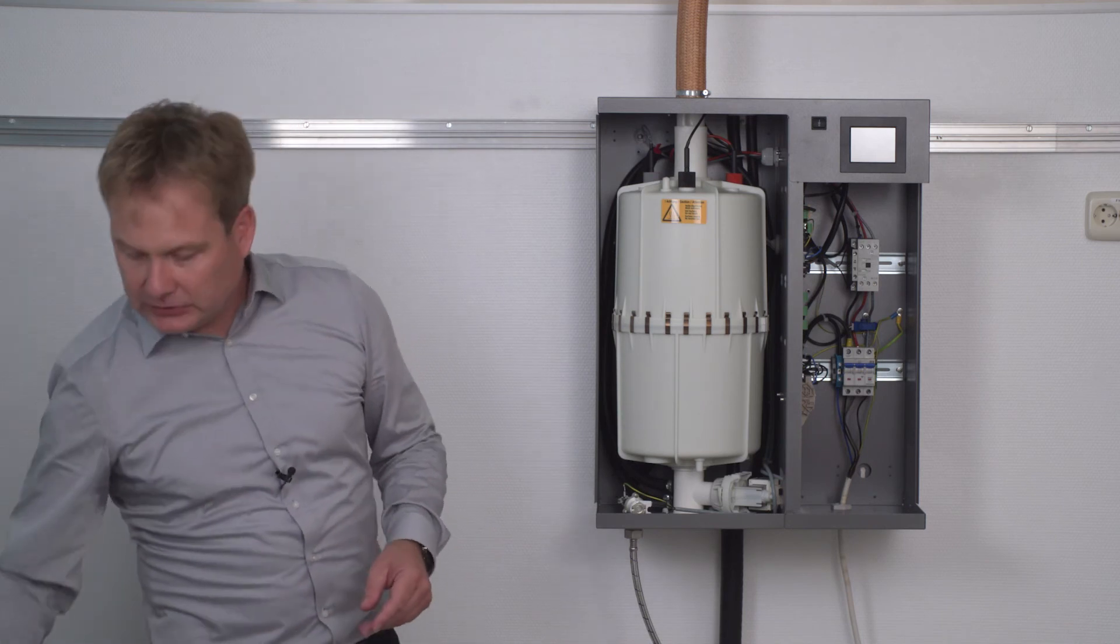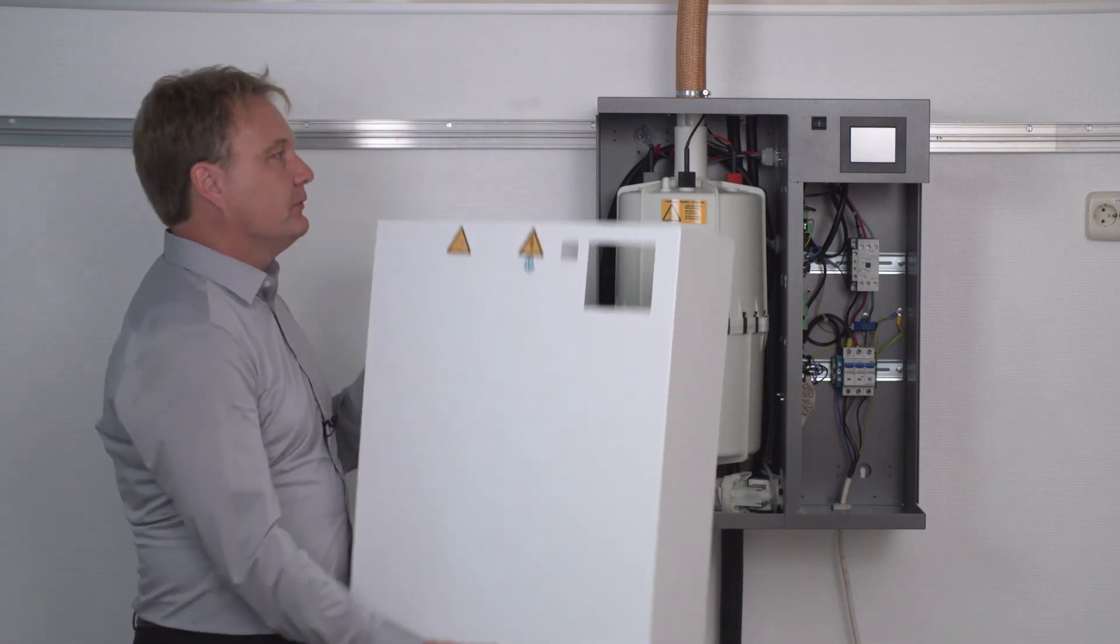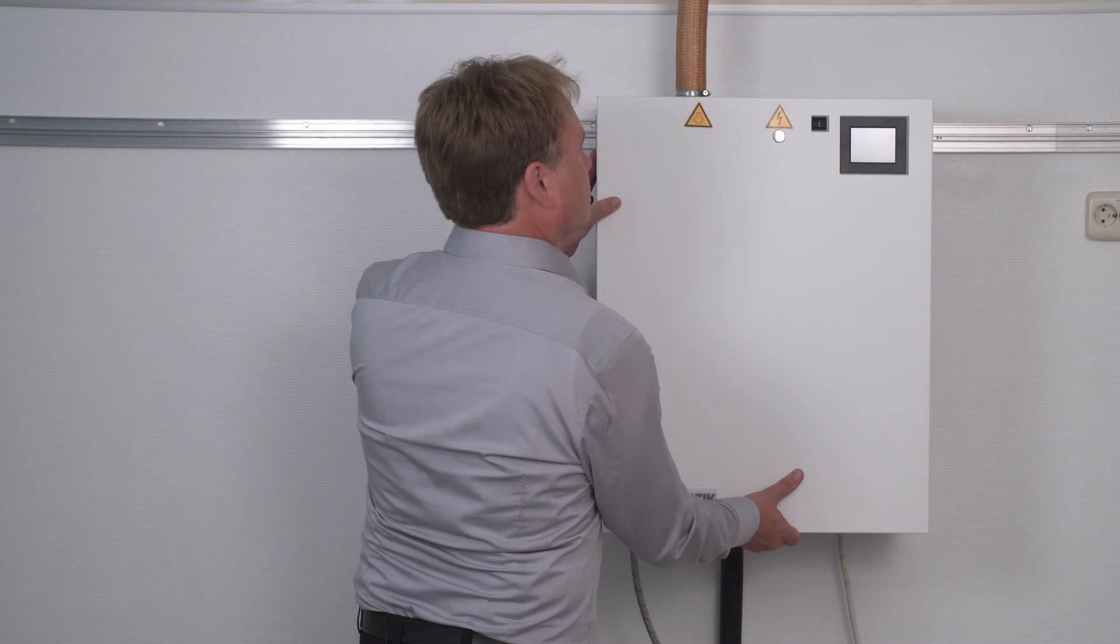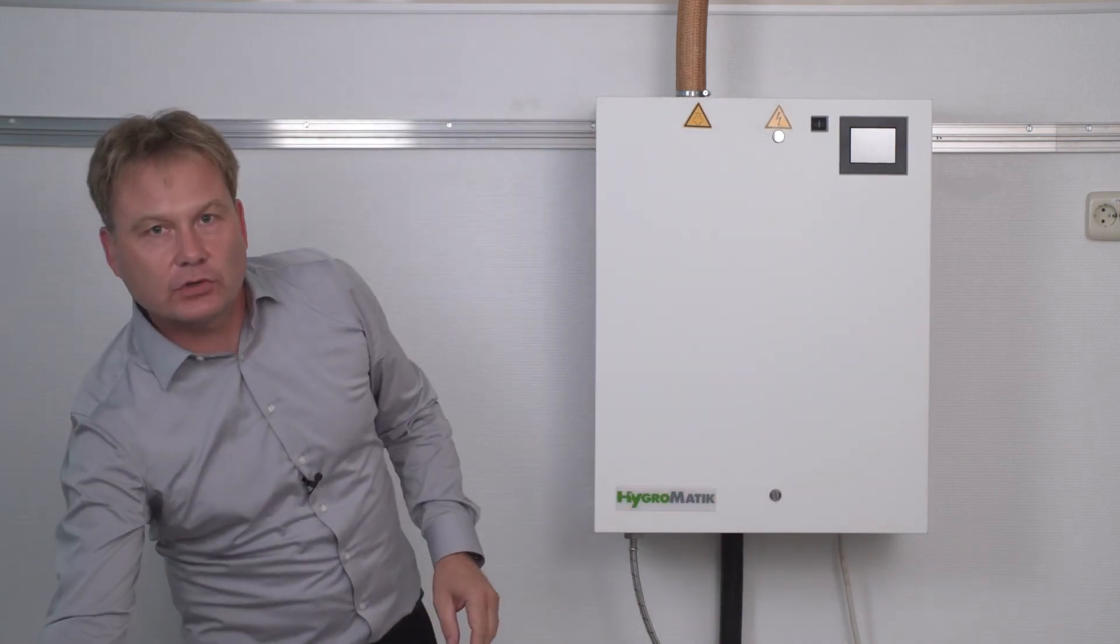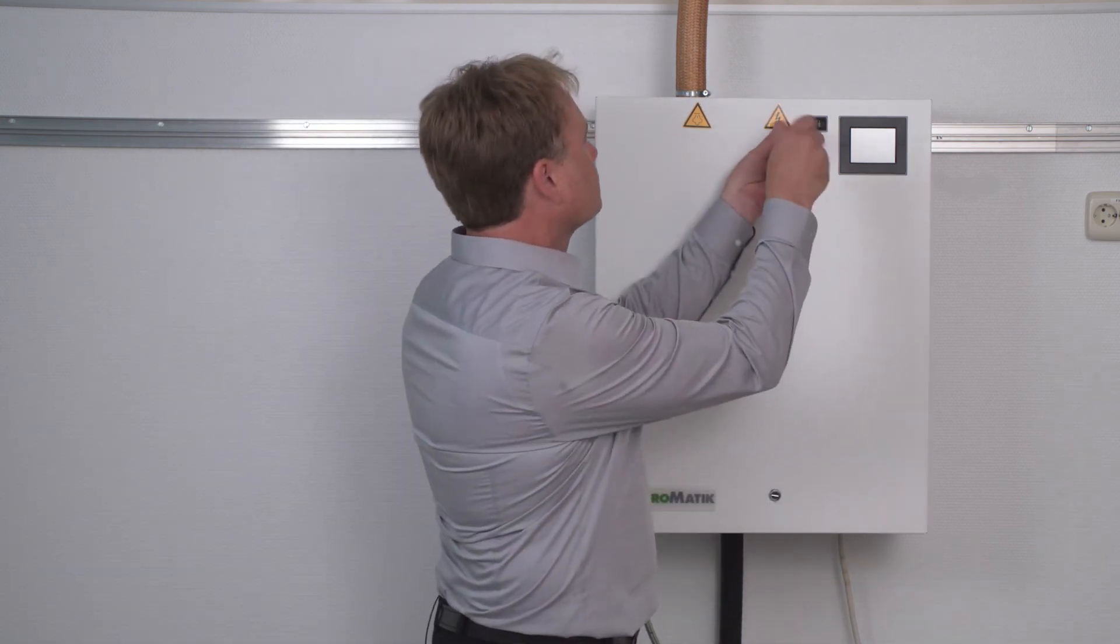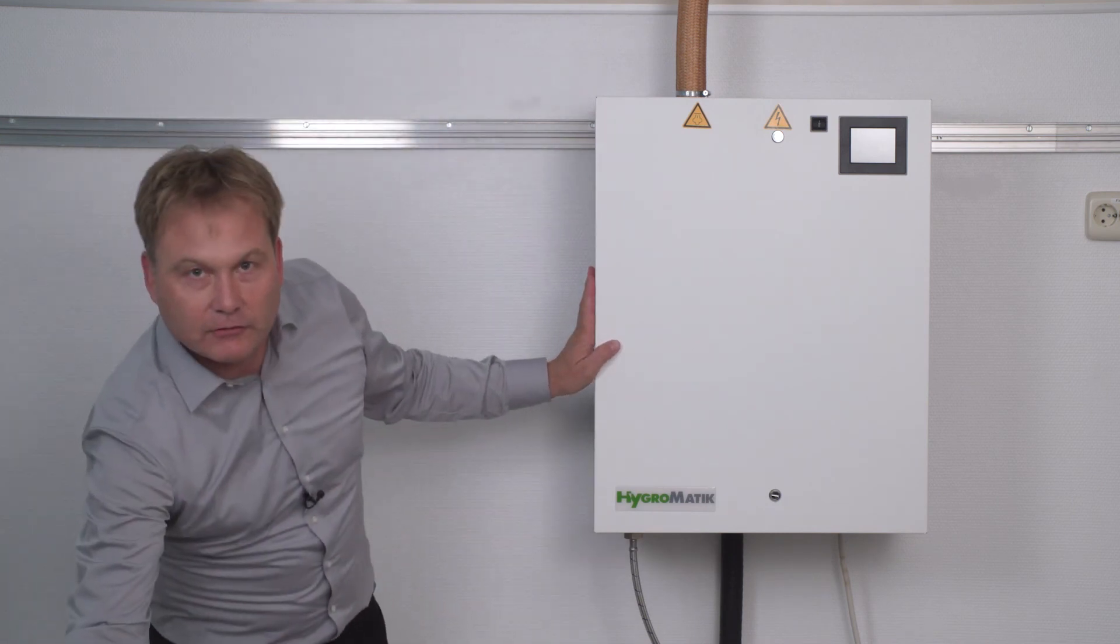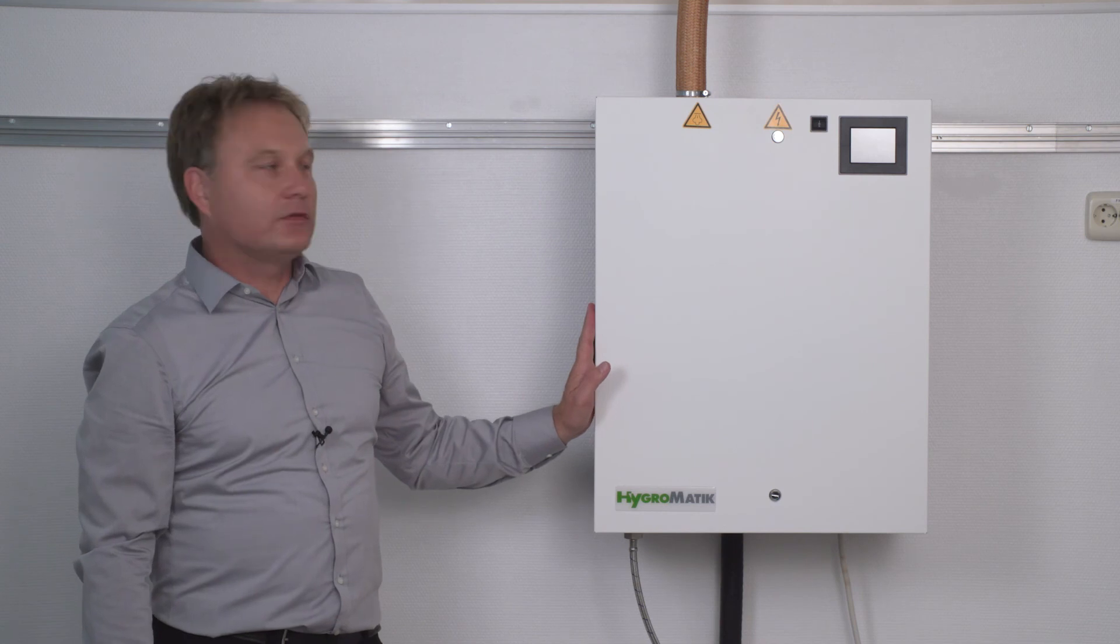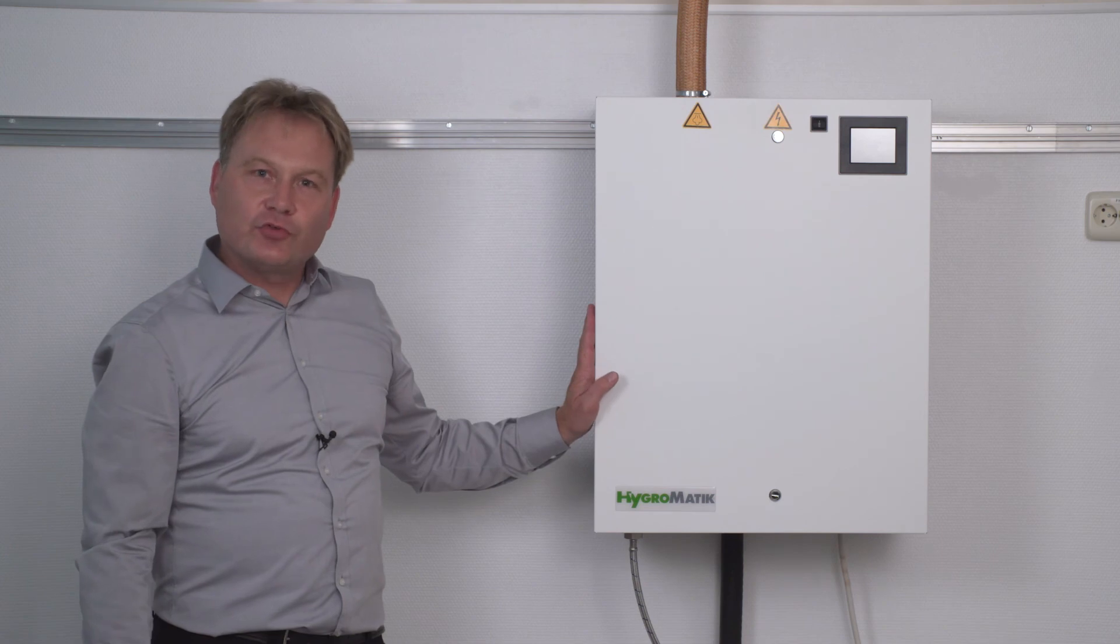After filling out the maintenance manual, I can put it away and reattach the housing cover to the unit. Turn the two lock bolts. And that concludes the maintenance of an electrode steam humidifier from the Flexline series. Thank you for watching.